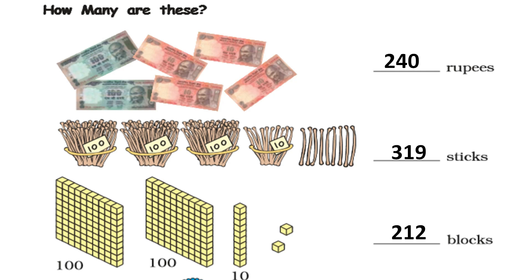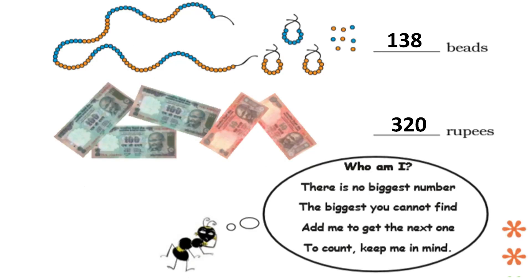The last one: there are 200 cubes, 1 set of 10 cubes, and 2 loose blocks — totalling 212 blocks. Count and write: the answer is 138 beads. For rubies: 300 in hundreds and 2 in tens — the answer is 320 rubies.